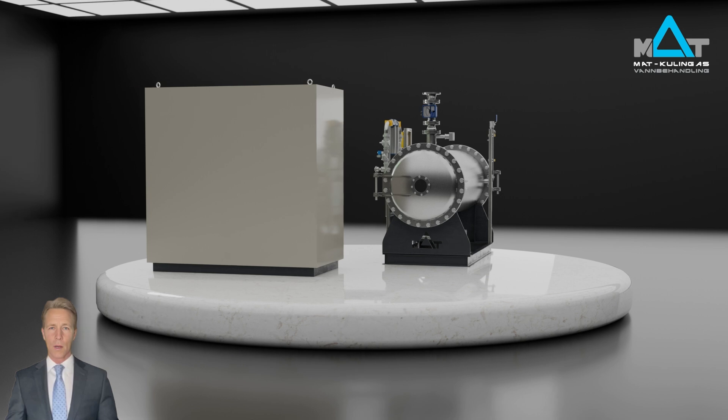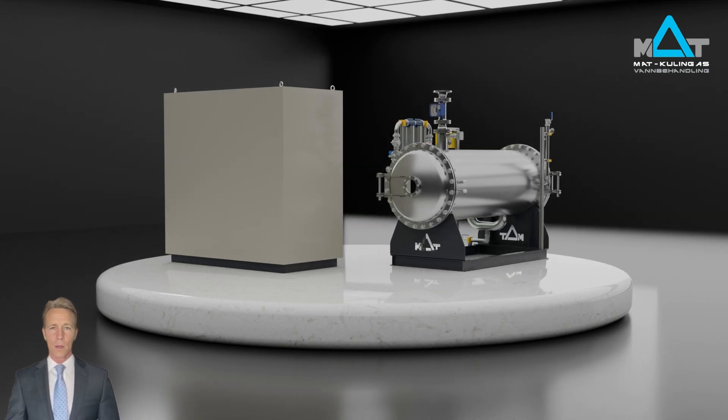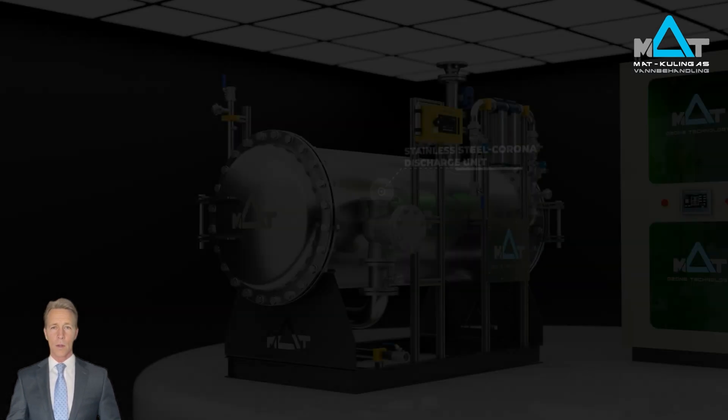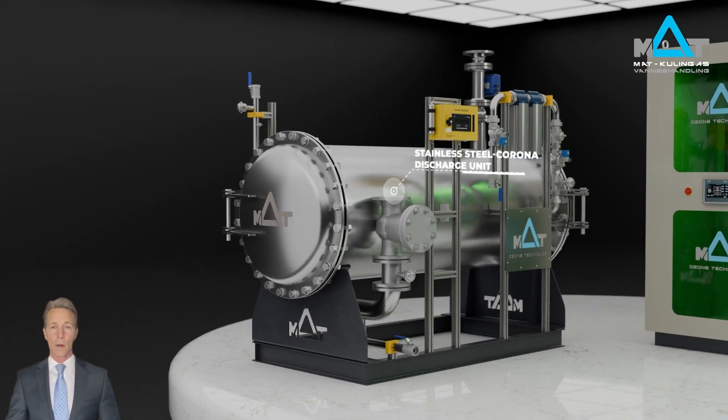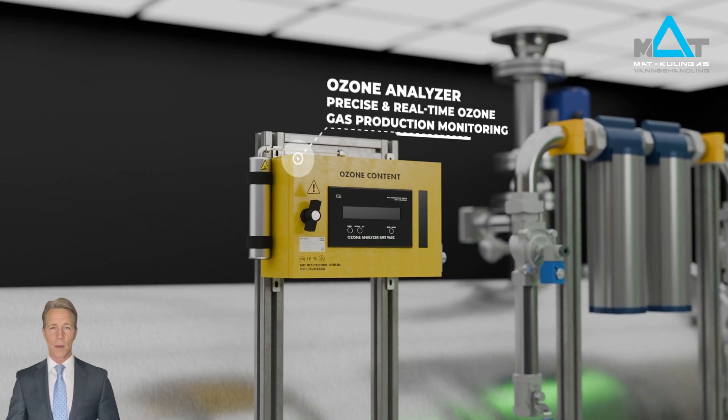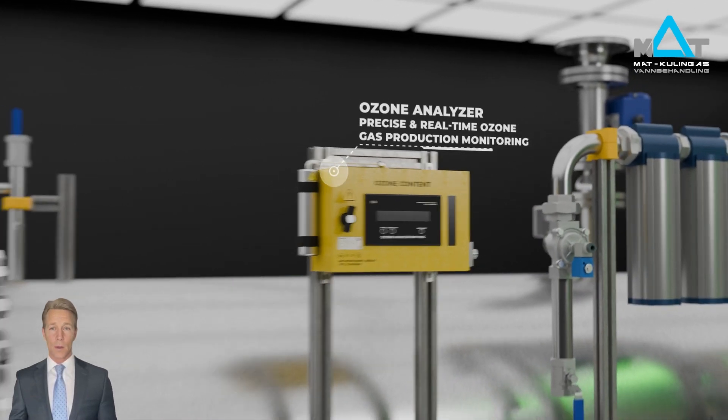A stainless steel corona discharge unit produces from 250 grams per hour up to 15 kilos per hour of ozone. Each unit includes an analyzer to monitor ozone gas levels.